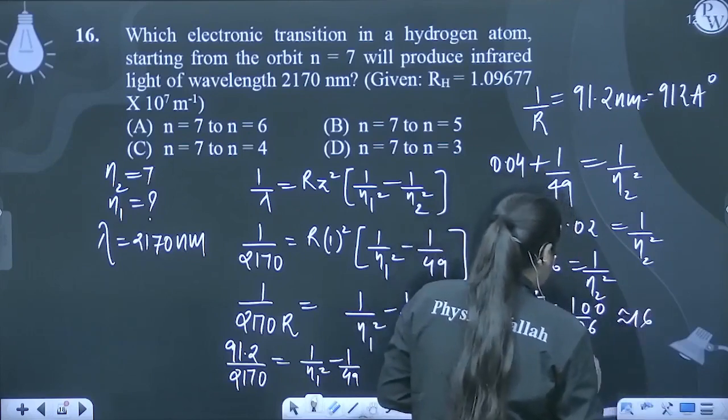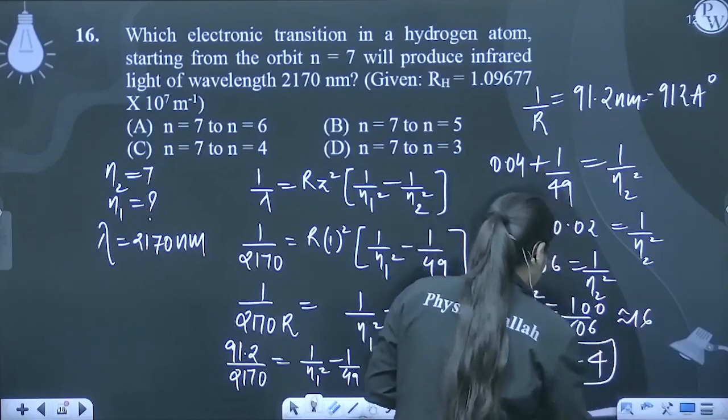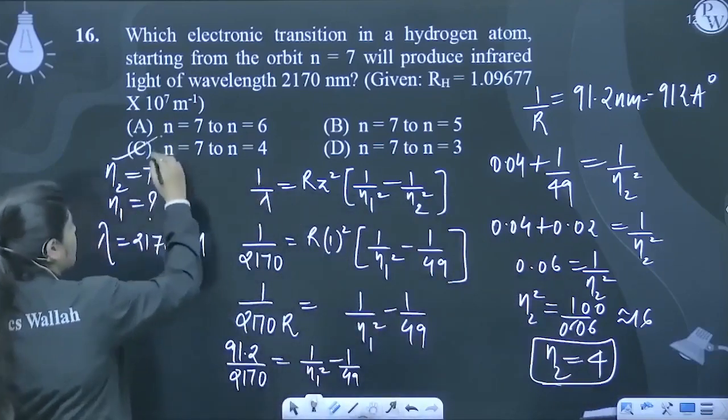So, n2 ki value kitnye aajayegi? 4. Here option number C.